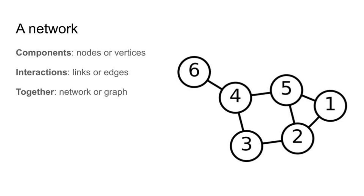I have to apologize for the confusion, but it has been something that's been around for many, many years. The terminology itself is: links and nodes form a network, or vertices and edges form a graph — but they can really be used interchangeably.